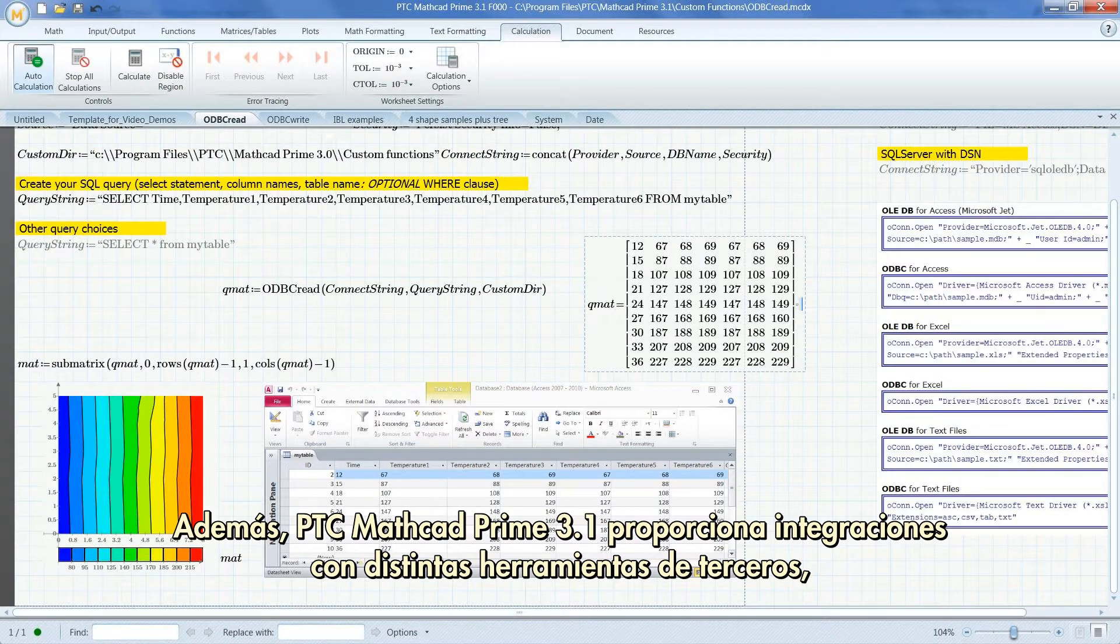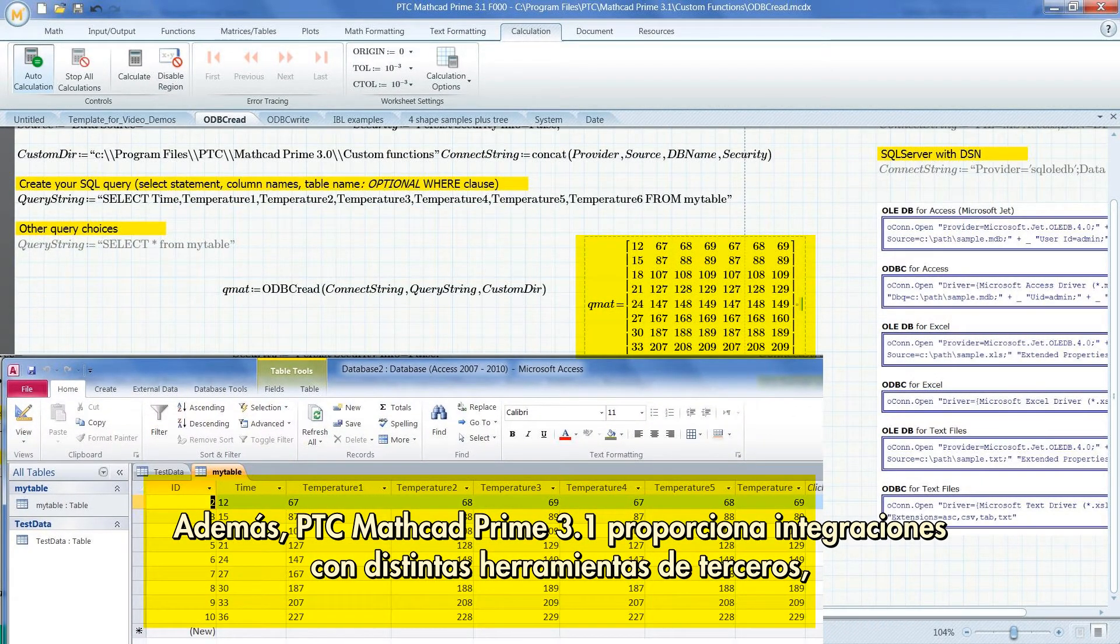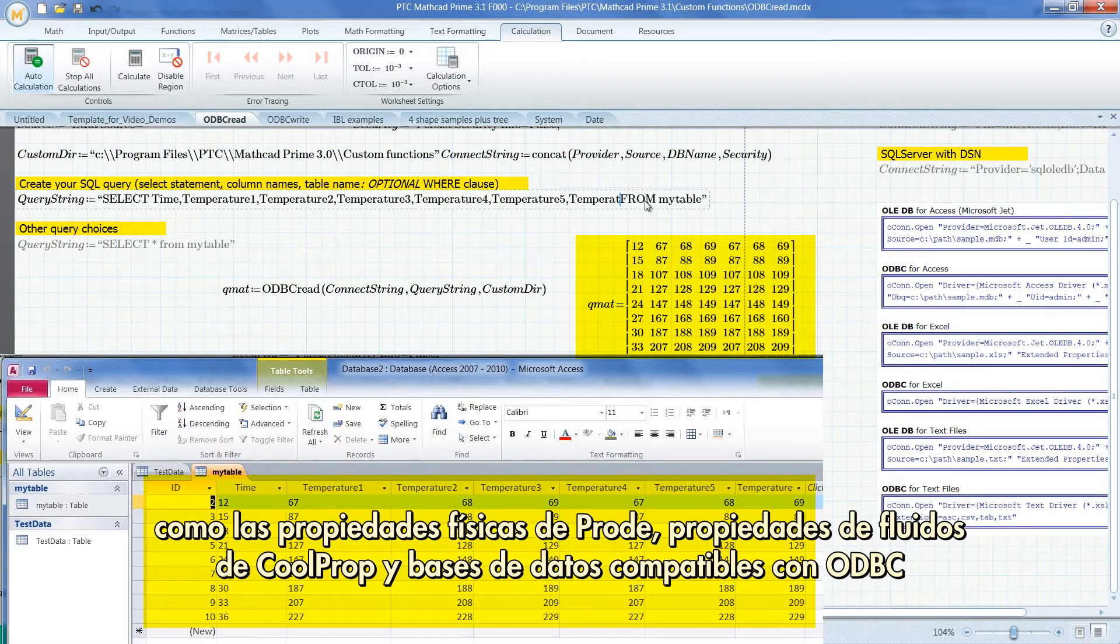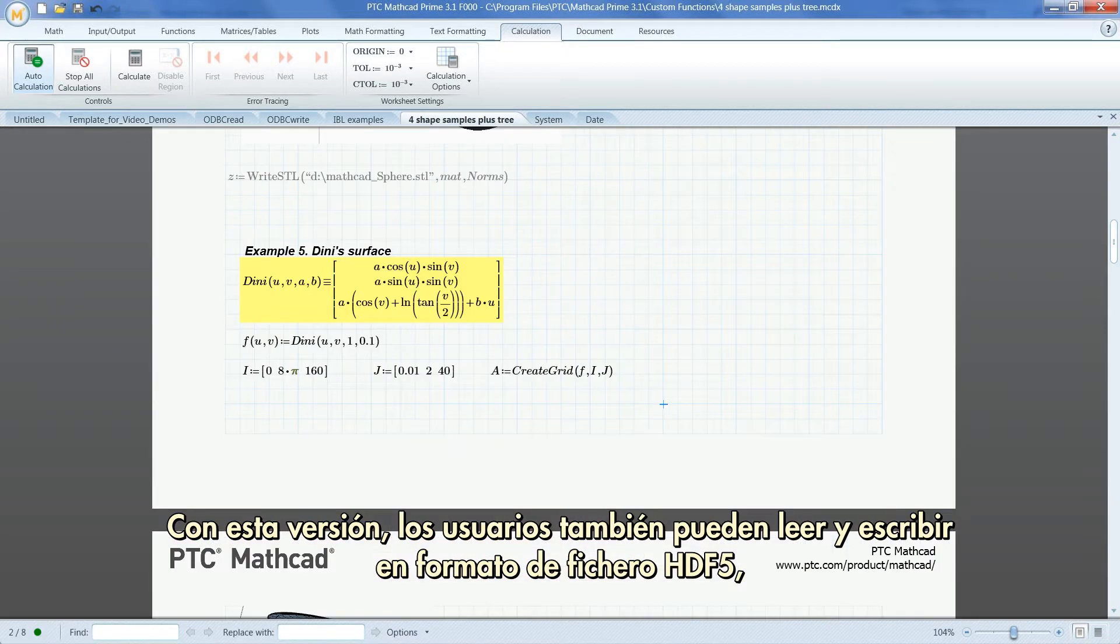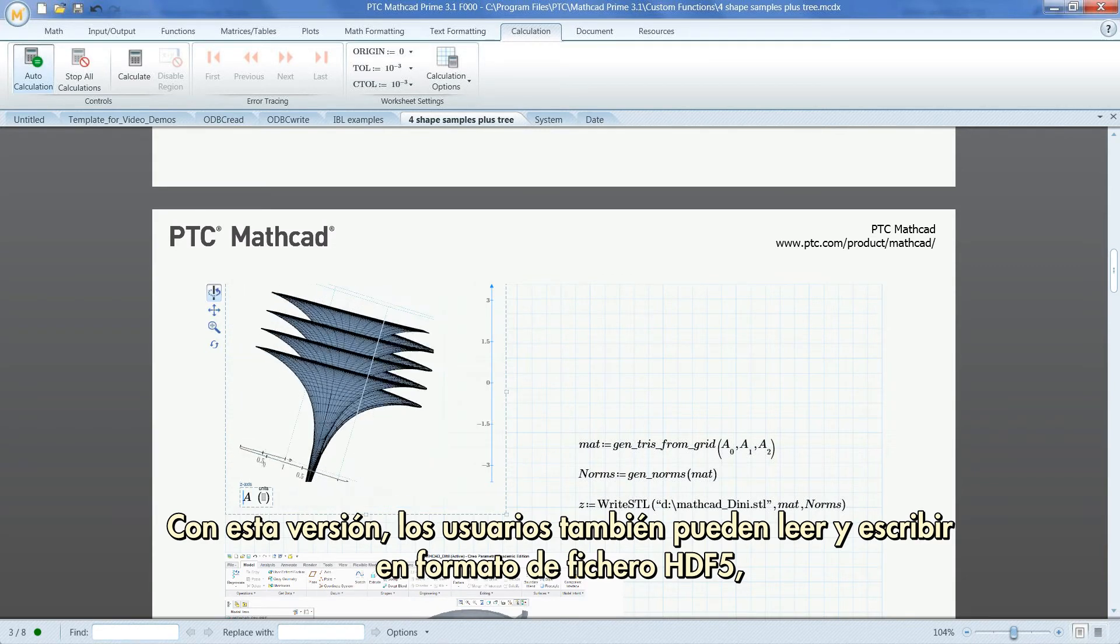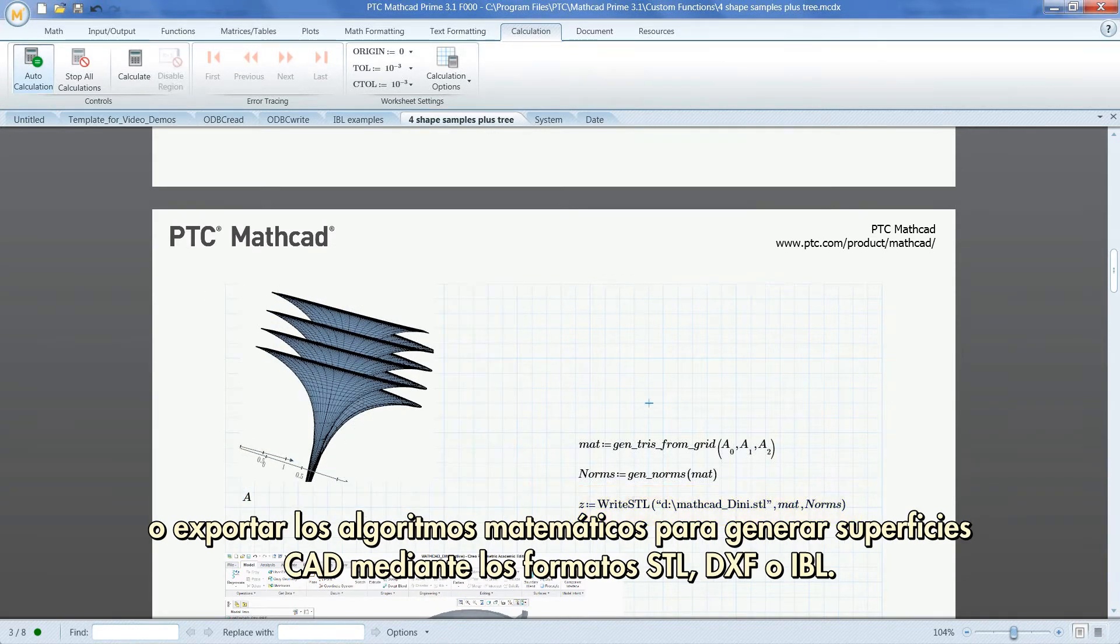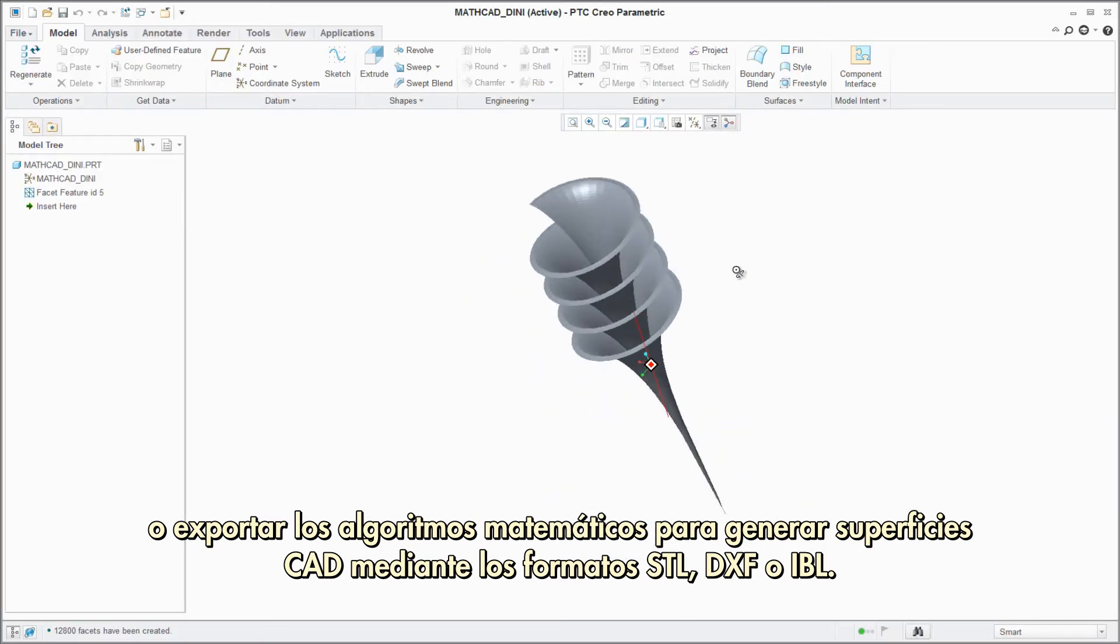Additionally, PTC MathCAD Prime 3.1 provides integrations with a variety of third-party tools, such as ProD's physical properties, CoolProp's fluid properties, and ODBC-compliant databases. With this release, users can also read and write HDF5 file format or export their mathematical algorithms to drive CAD surfaces through STL, DXF, or IBL formats.